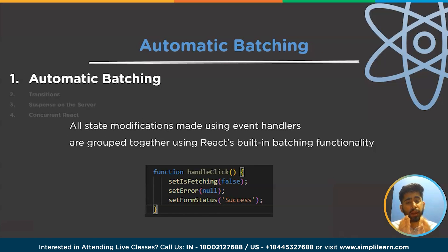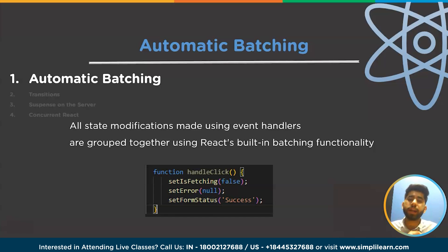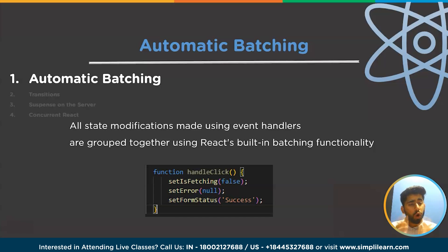In automatic batching, all state modifications made using event handlers are grouped together using React's built-in batching, which prevents components from going through a pointless re-rendering procedure. React 18 features a modified version called automatic batching that groups all state modifications made by createRoot together. In short, automatic batching means doing all micro tasks together at the end of a task to save time.